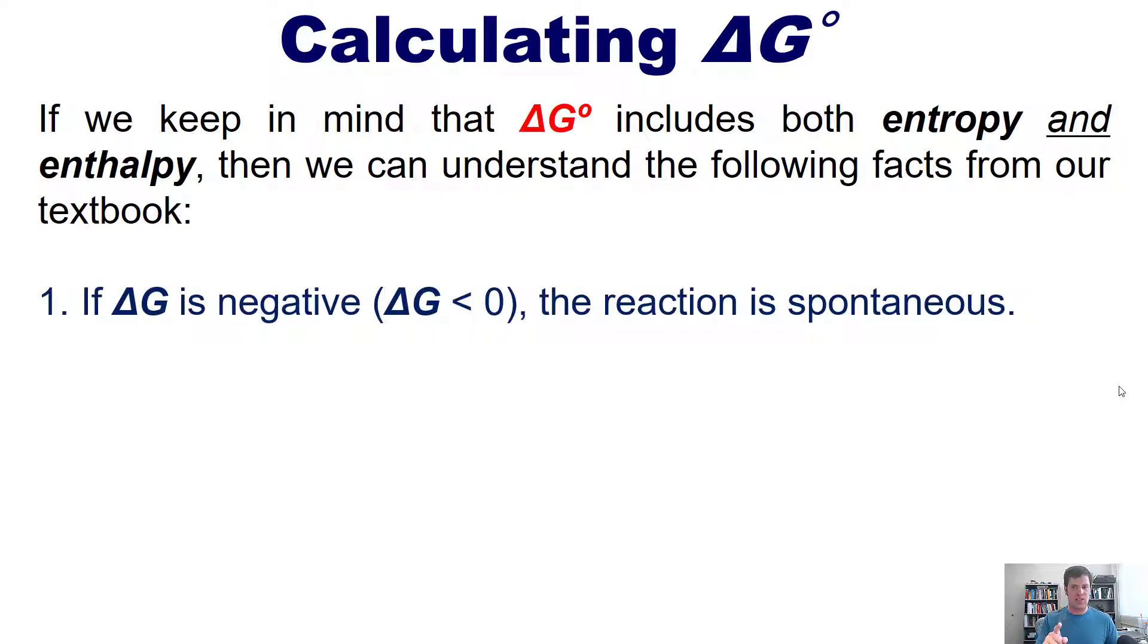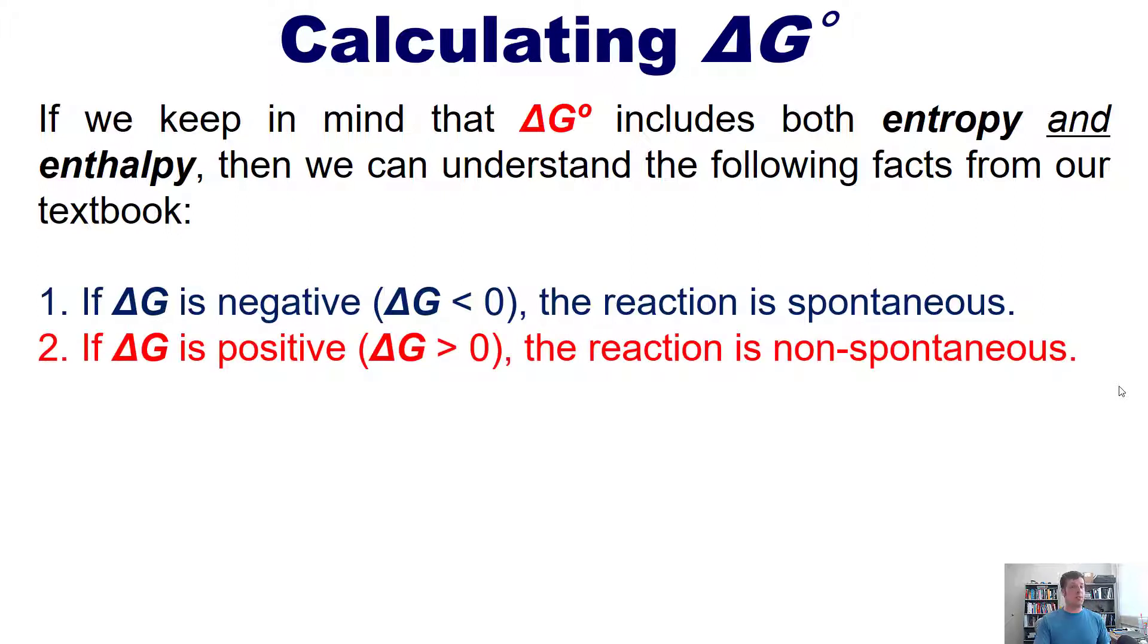First, if delta G is negative, then the reaction is spontaneous. Conversely, if delta G is positive, then the reaction is non-spontaneous. And lastly, if delta G is zero, then your reaction is at equilibrium.